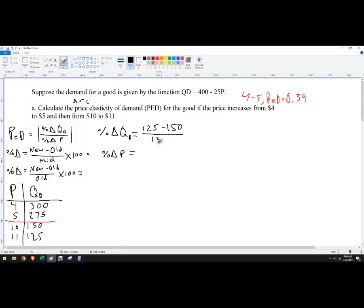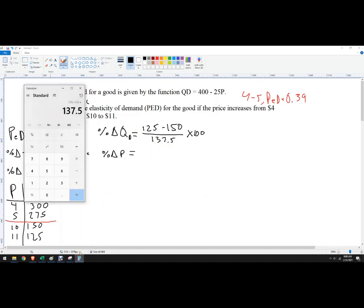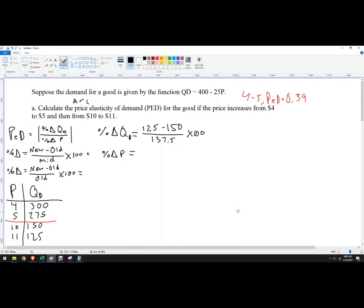So 125 times 100, so it's 25 divided by 137.5, and I get 18 percent.